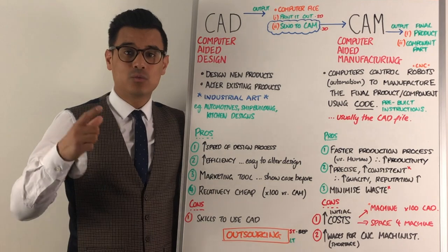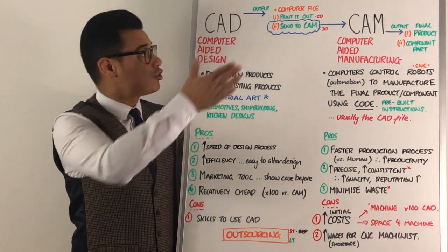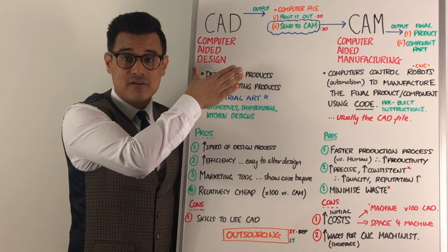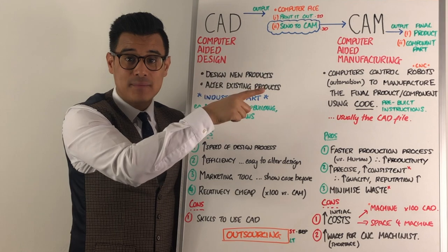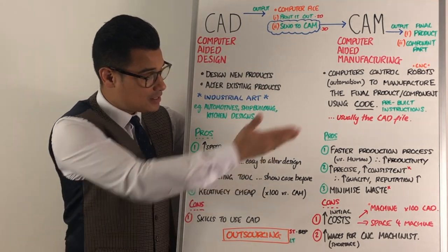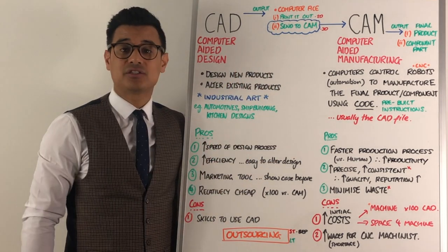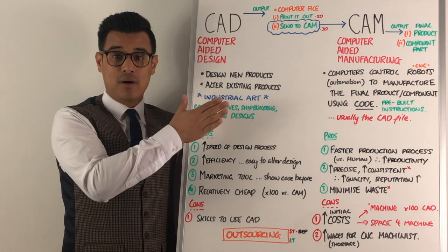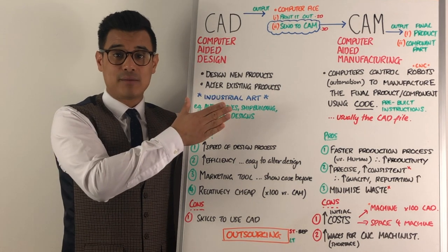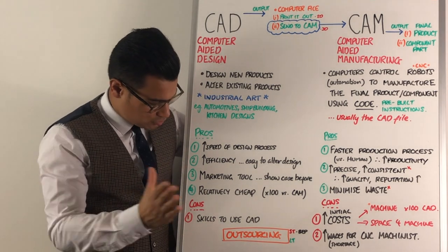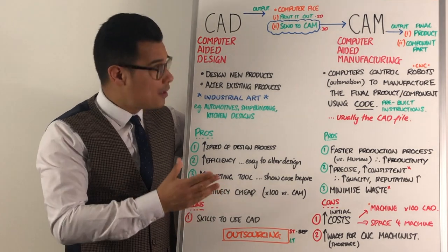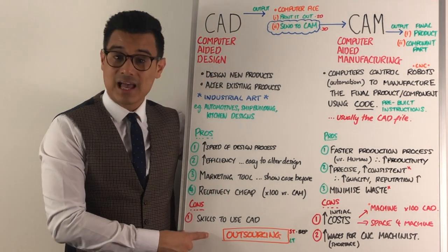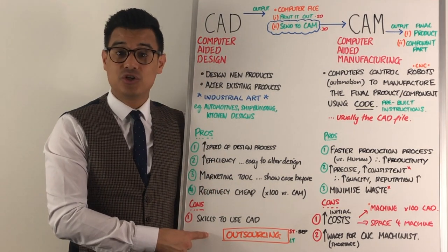When comparing the cost of CAD to the cost of CAM, CAD is very cheap and CAM is very expensive — in fact, CAM could cost as much as a hundred or even two hundred times more than buying a CAD program. So CAD is relatively cheap, but there are disadvantages: the first is that you need to have the skills to use it.